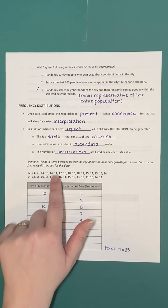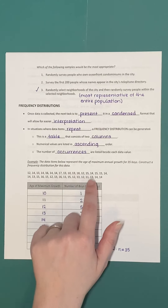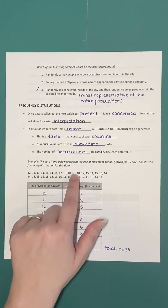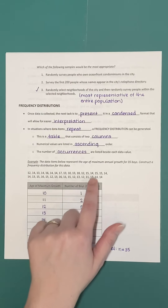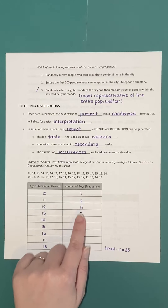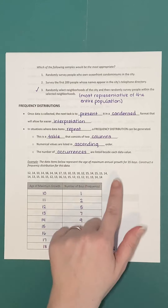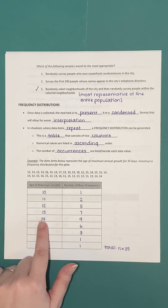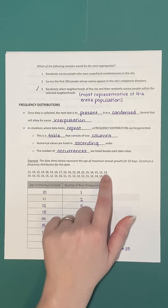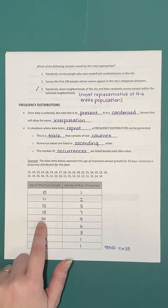For 13, counting carefully — 1, 2, 3, 4, 5, 6, 7 — it occurs with a frequency of 7. It's very easy to miscount in a situation like this, so do a double count. Moving to 14: 1, 2, 3, 4, 5, 6, 7, 8, 9 — so 14 occurs with a frequency of 9.